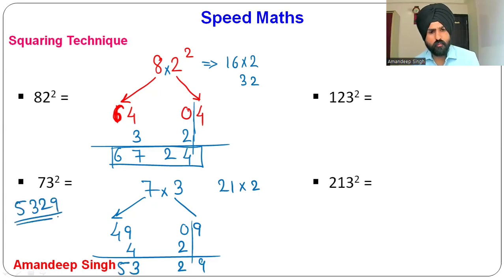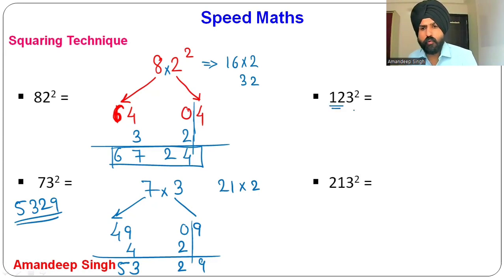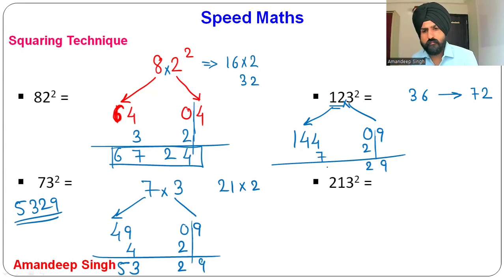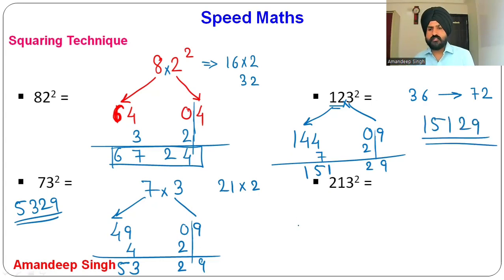For 123²: treat 12 as a single unit. 12² = 144, 3² = 09. 12 × 3 = 36, double = 72 (ignore last digit, write 7). Add: 144 + 7 = 151, bring down 2 and 9. Answer: 15129.